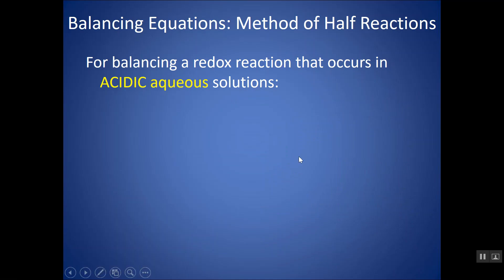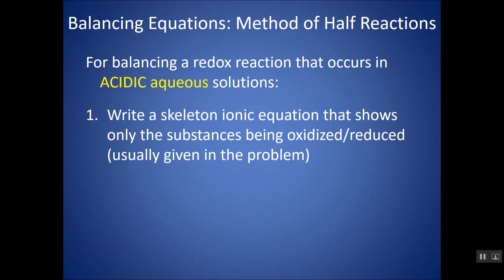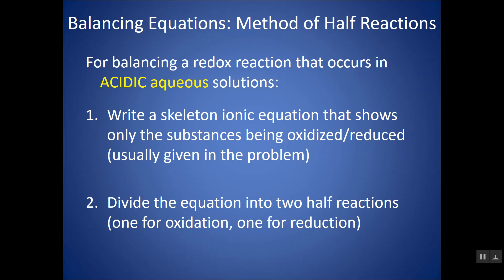Today we're going to look at how to balance equations using the method of half reactions. You might see these reactions happening in acidic solutions or basic solutions, so we'll look at each of those scenarios. The method of half reactions is one way to balance a redox reaction, and step one is to write a skeleton ionic equation that shows only the substances being oxidized and reduced — that's usually what's given in the problem.